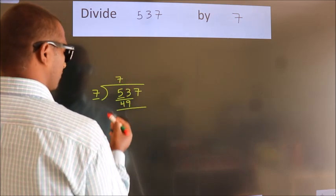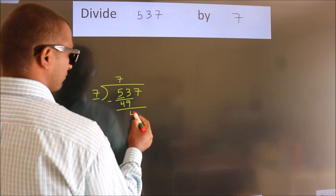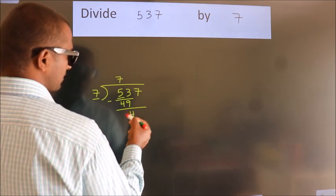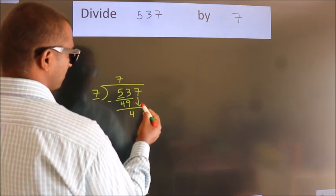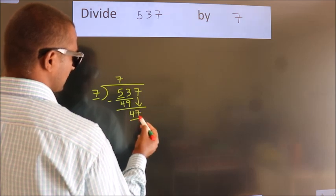Now, we should subtract. We get 4. After this, bring down the next number. So 7 down. So 47.